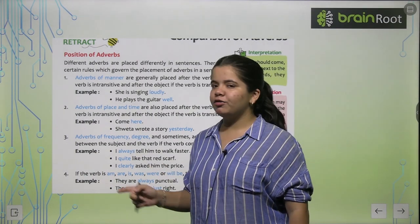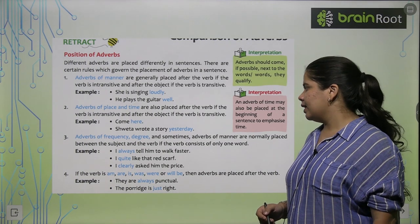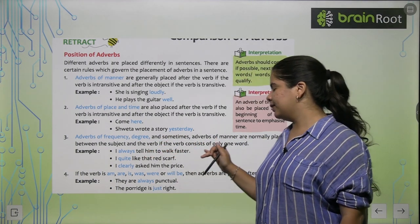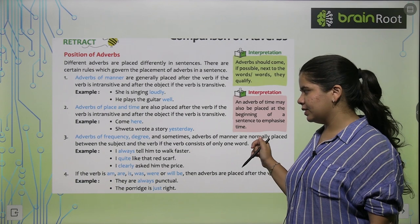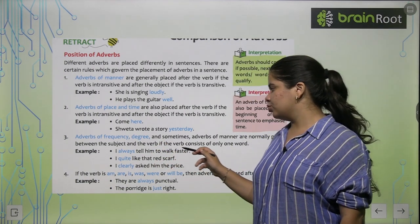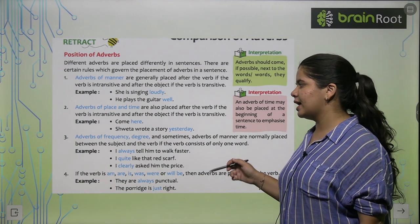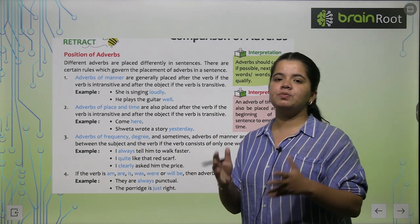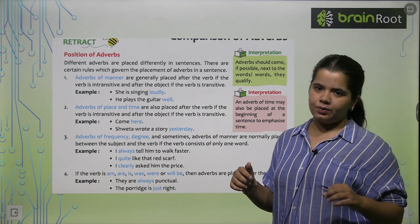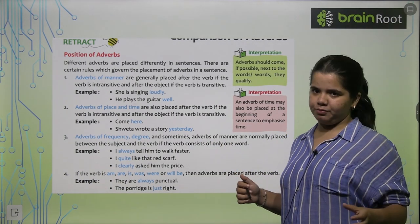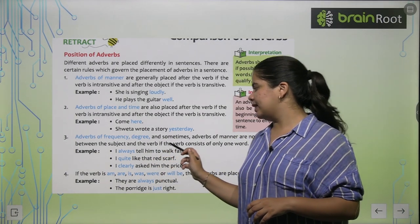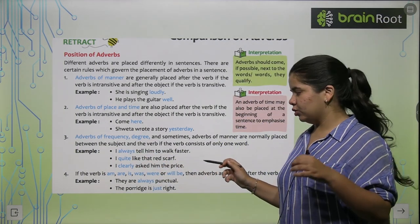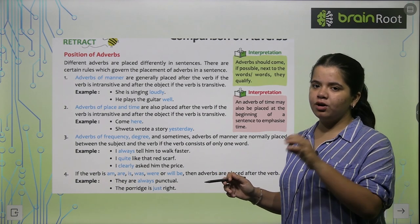Next, adverbs of frequency or degree — how do we place them? Adverbs of manner are normally placed between the subject and the verb if the verb consists of only one word. For example, 'I always tell him to walk faster.' So 'I' is our subject, 'tell' is our verb, and 'always' — an adverb of frequency — comes between them.